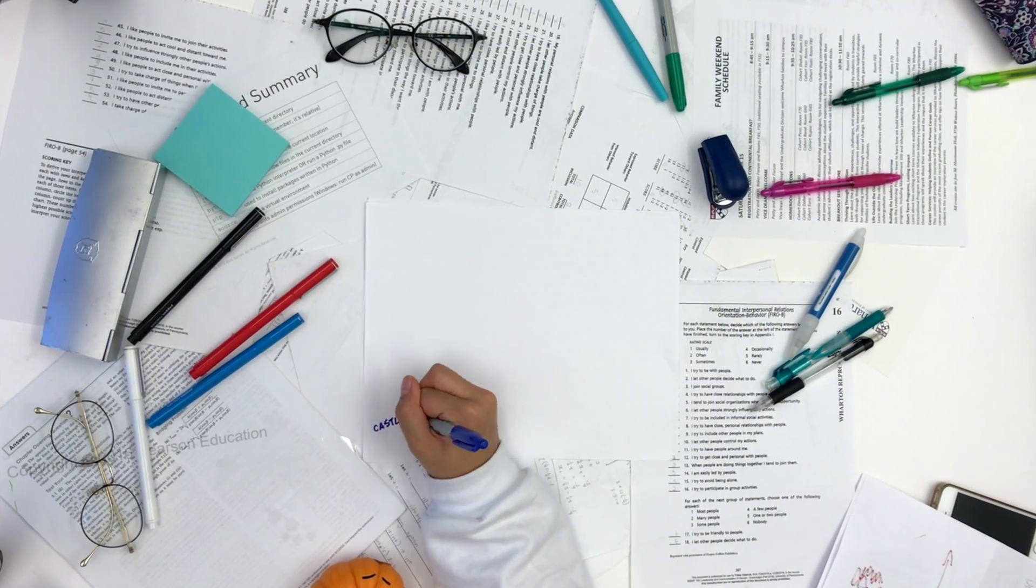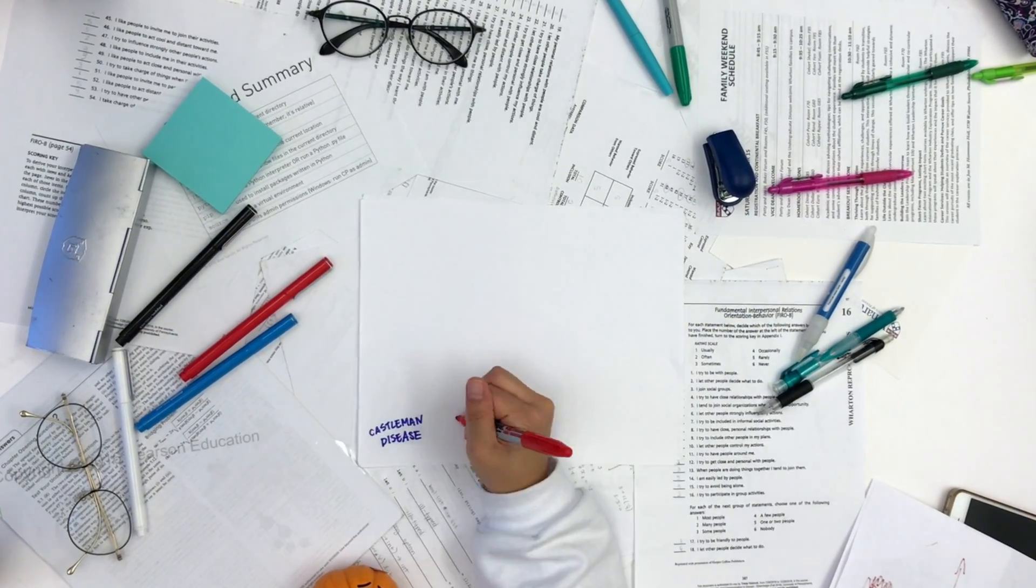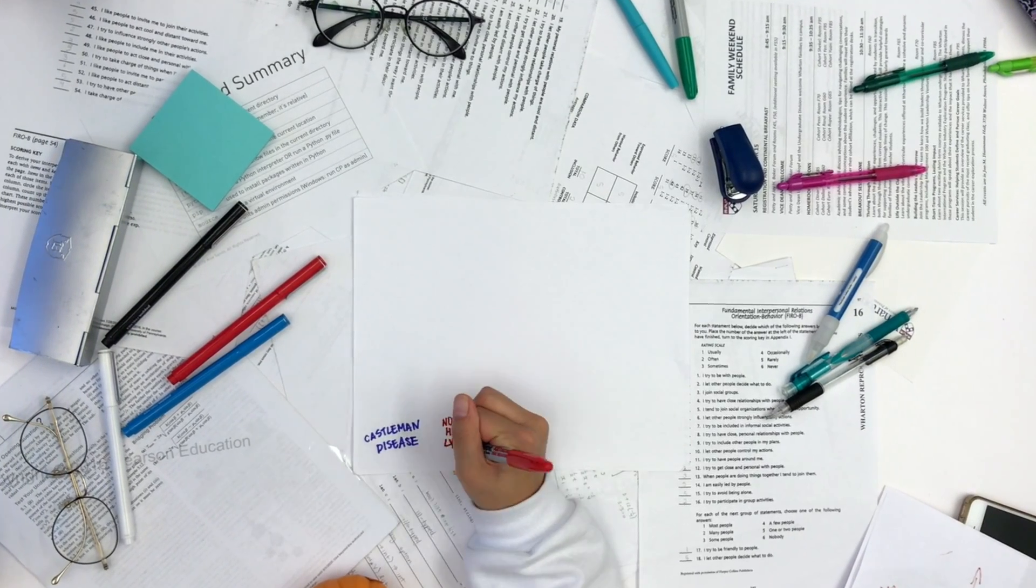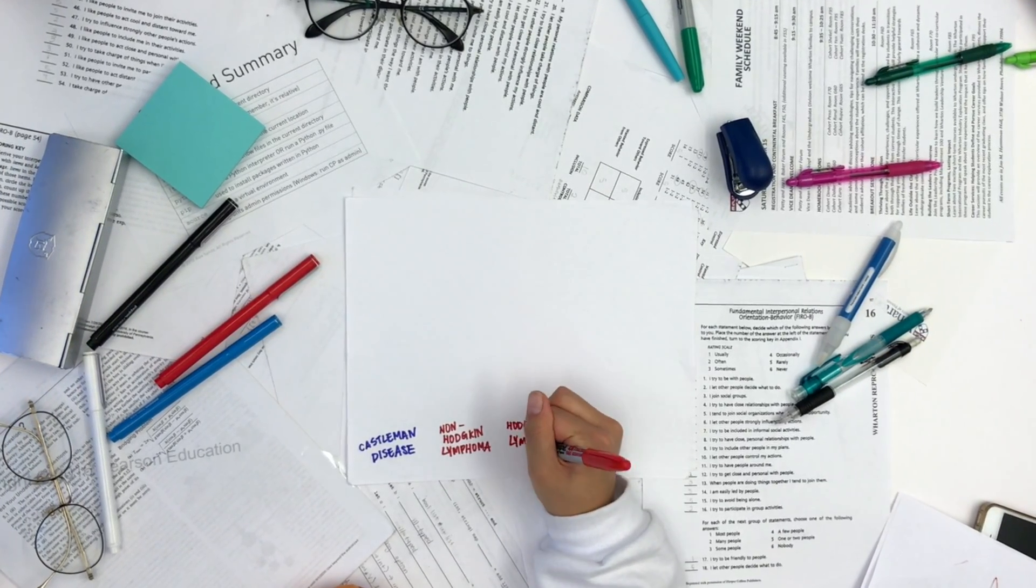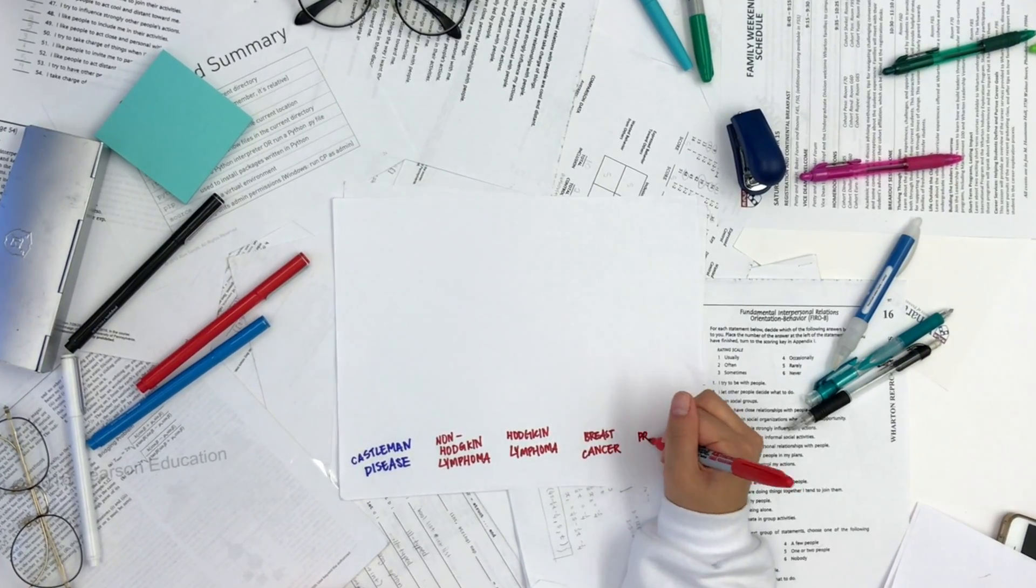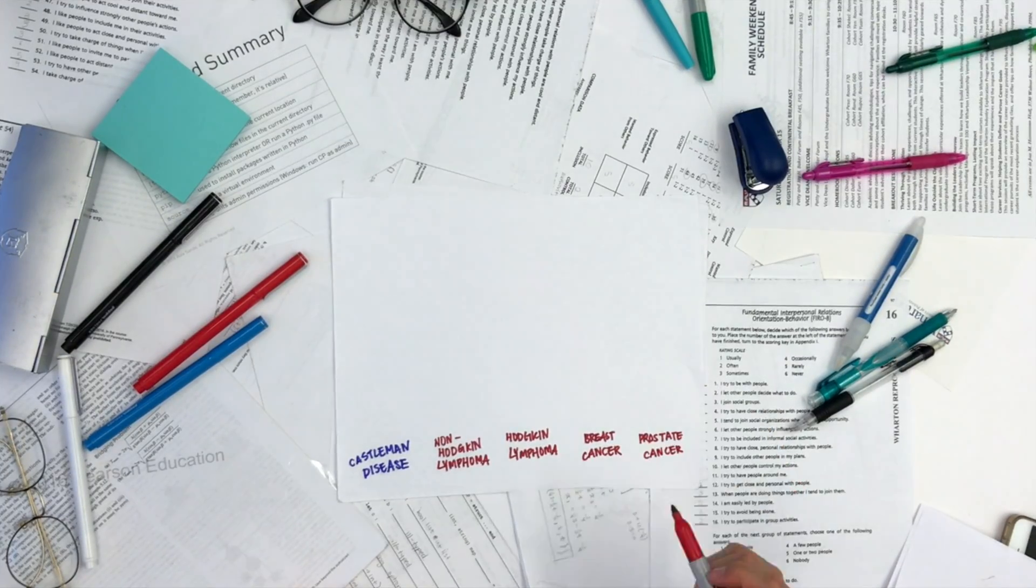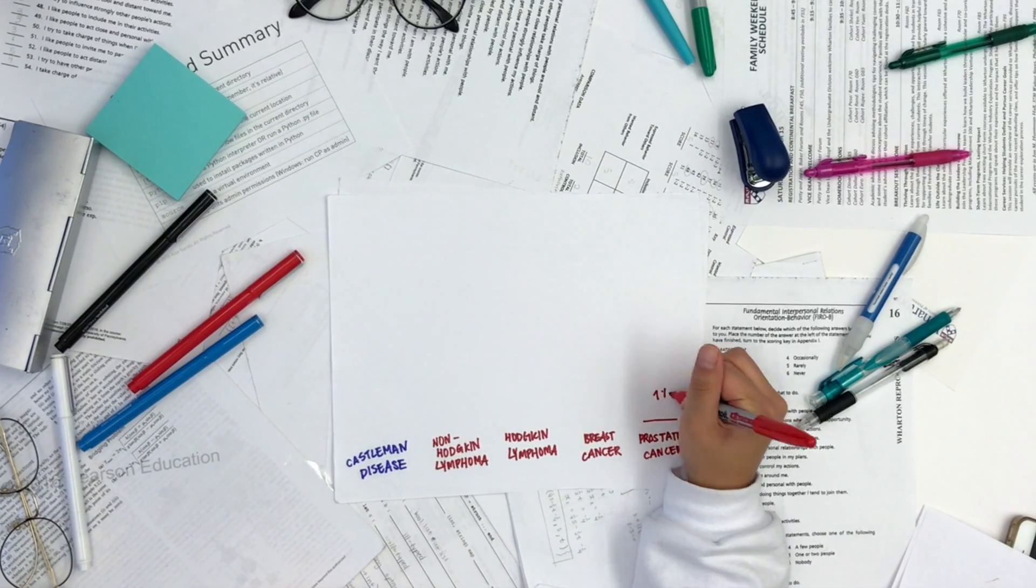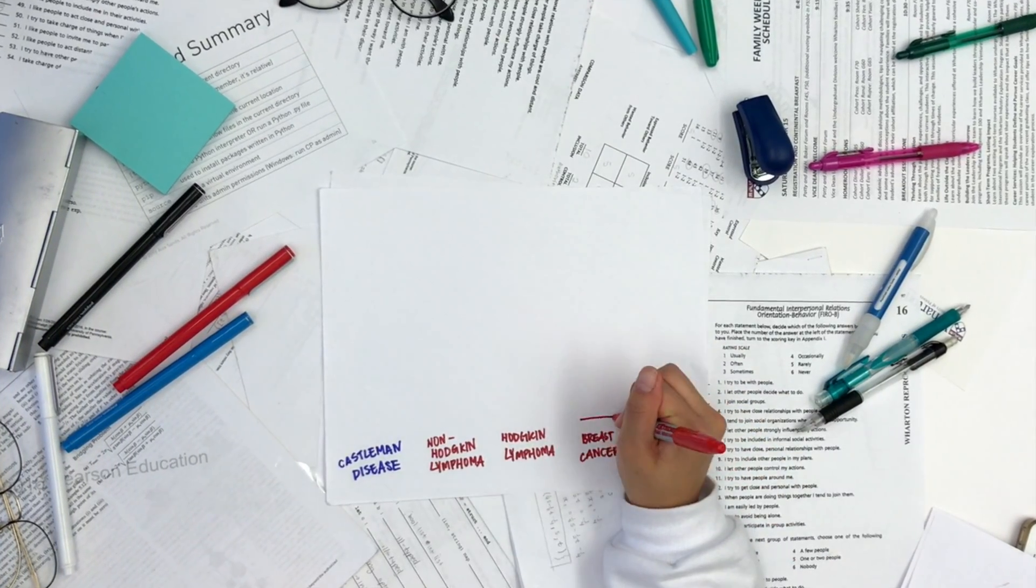Firstly, let's compare the mortality rate of Castleman disease over 5 years since diagnosis compared to those of other commonly diagnosed cancers. Here we have prostate cancer, which amounts to 1% mortality rate over 5 years.